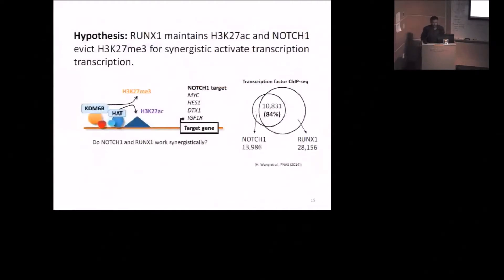So here is the question: when RUNX1 and NOTCH1 complex both bind to the same genomic location, what happens? We hypothesize that NOTCH1 complex removes the repressive mark and RUNX1 complex deposits the active marks to activate target genes. Indeed, some of the key NOTCH1 target genes have been shown to be regulated by RUNX1 gene. We looked at transcription factor ChIP-seq data and found that more than 80% of NOTCH1 binding sites frequently co-occur with RUNX1 binding sites in T-ALL genome.